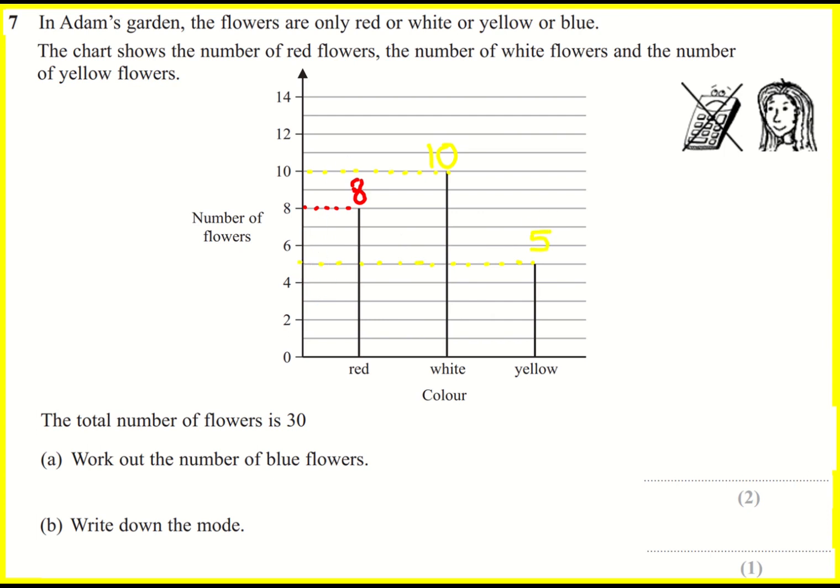And we need to work out the number of blue flowers. Okay, so we can pop blue over here, we're not going to add it to the chart, I'll just keep it along there. So we've got eight reds, we've got ten whites, and we've got five yellows. All together that gives us a number of 23.